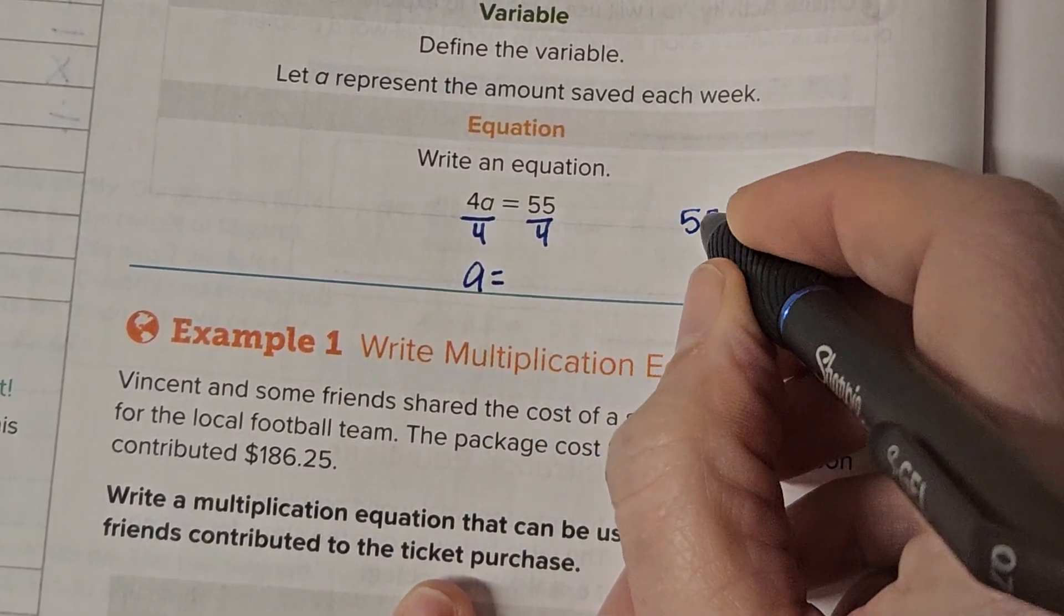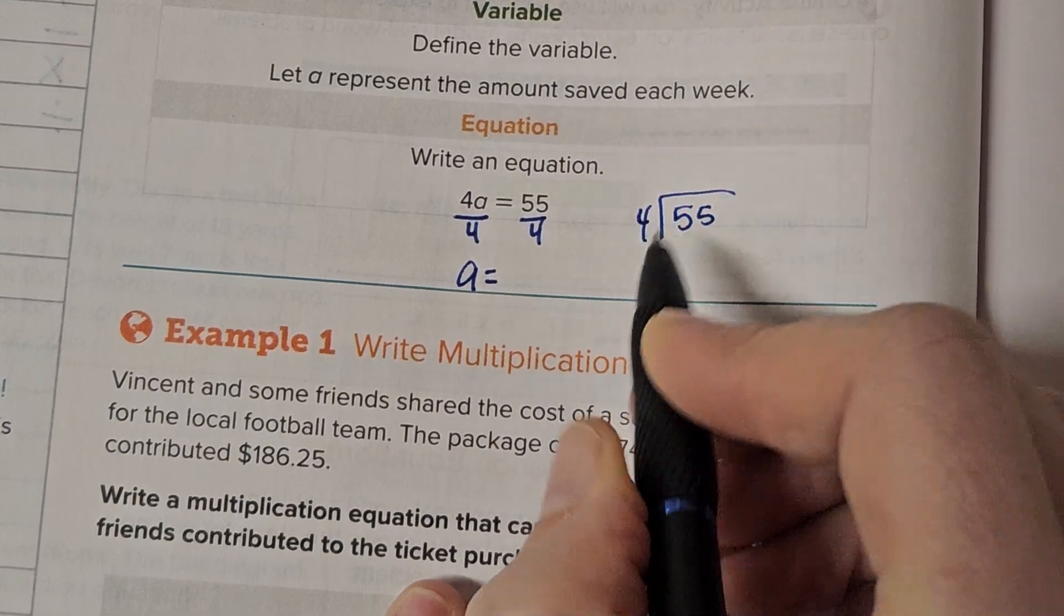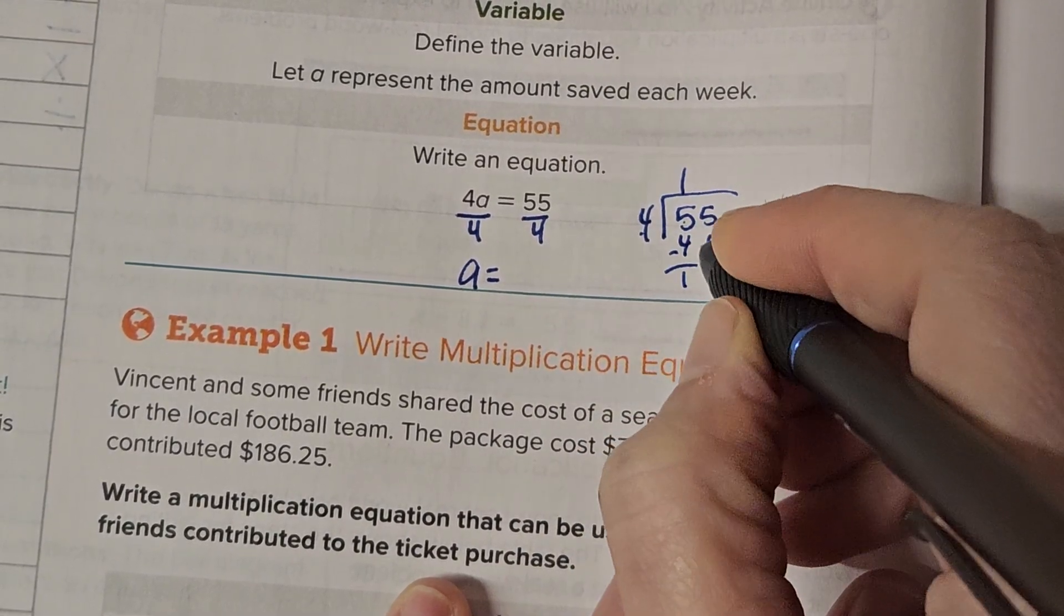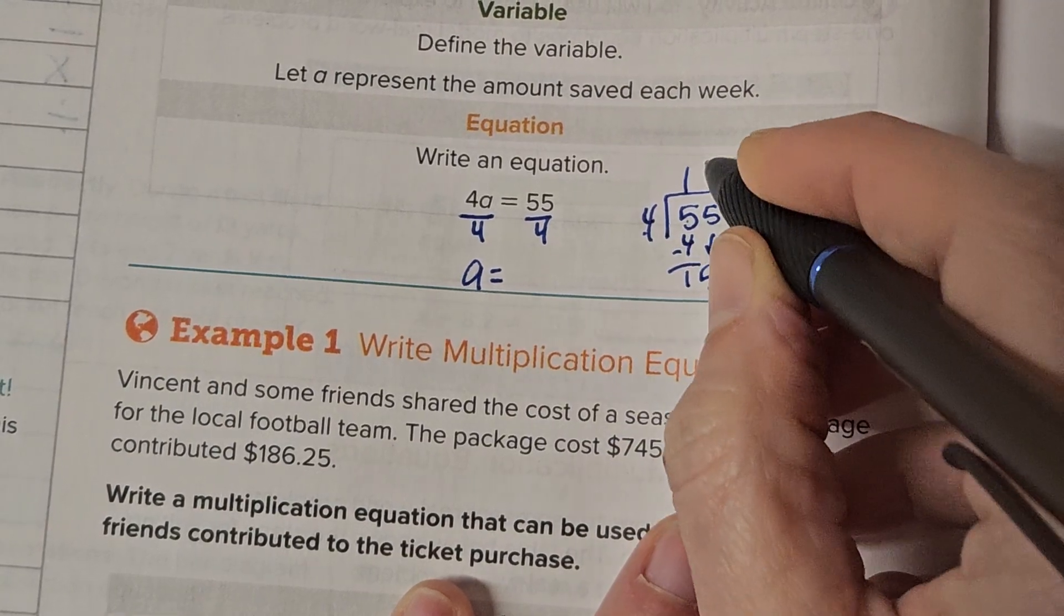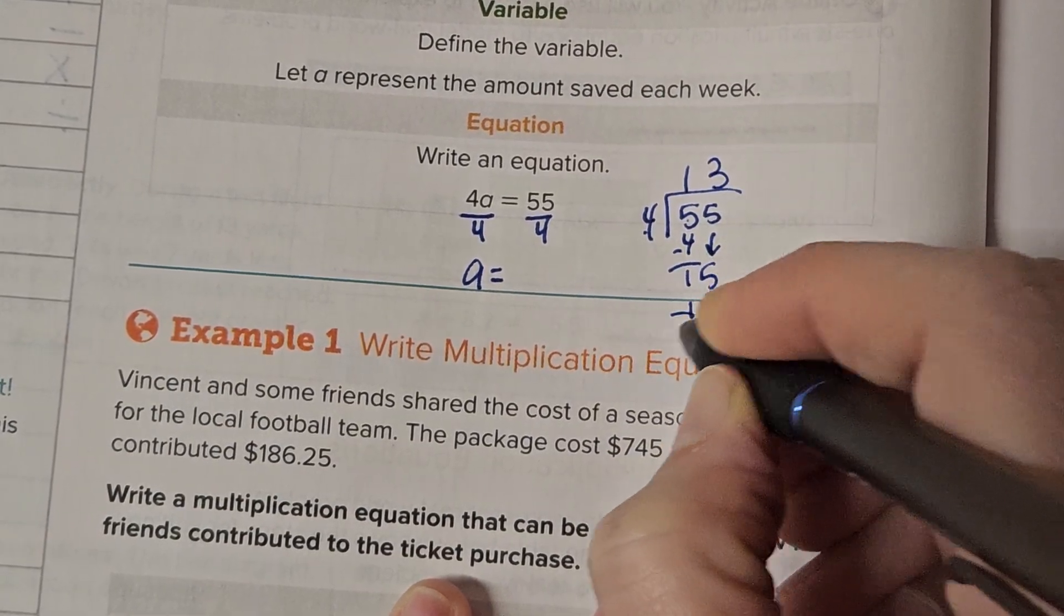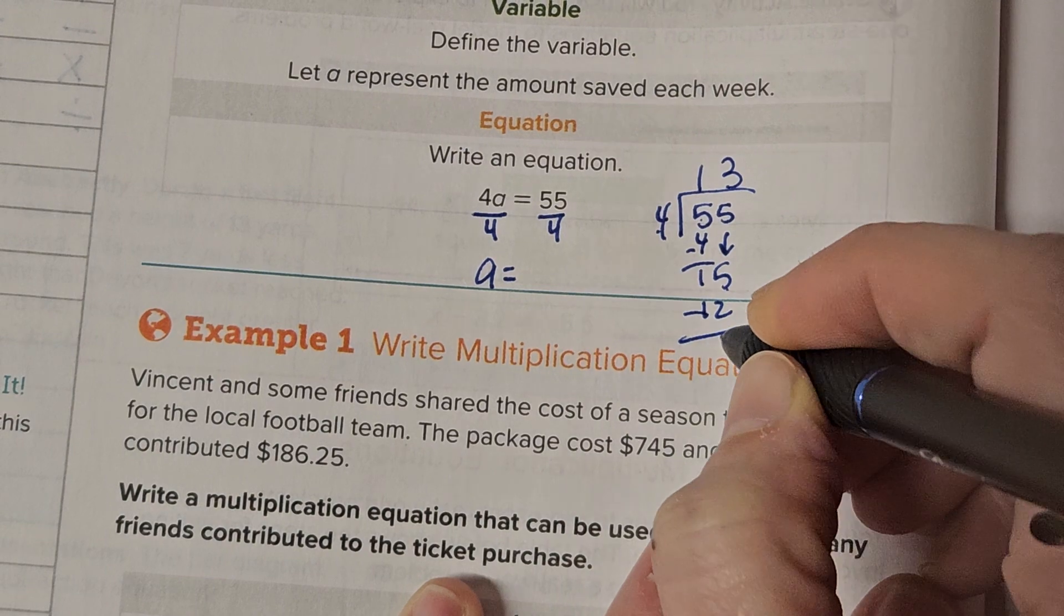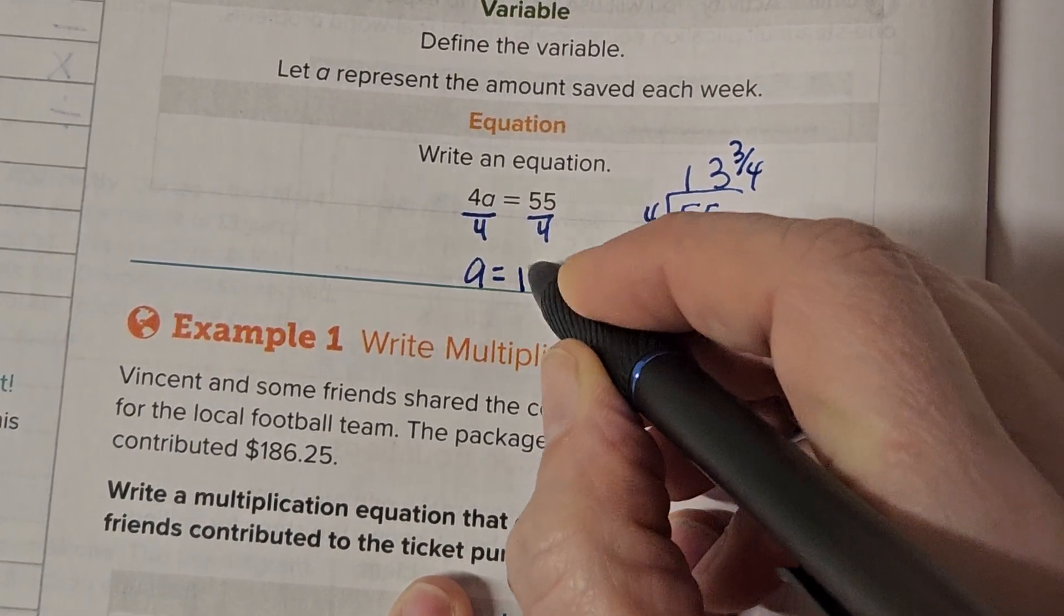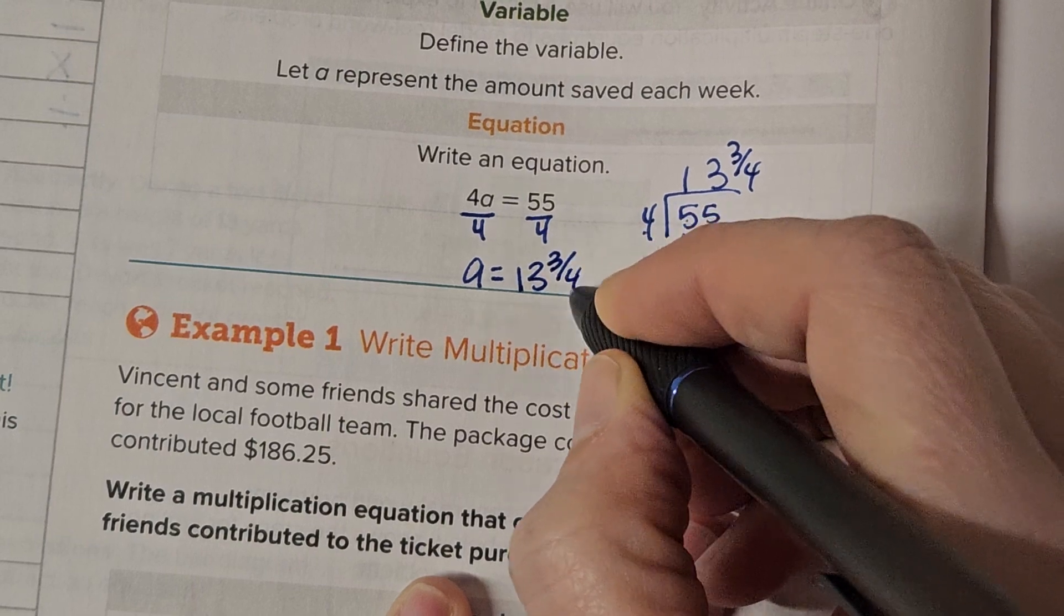And then 55 divided by 4, if you're not sure what that is, 4 goes into 5 one time, which is 4, subtract, 1 left over, bring down the 5. 4 goes into 15 three times, which is 12. Subtract, and you have 3 left over. That means 3 fourths. So it's 13 and 3 fourths.